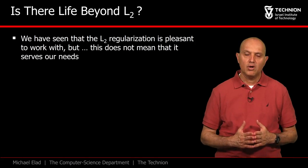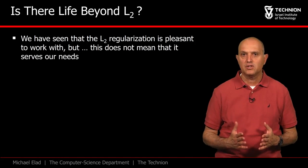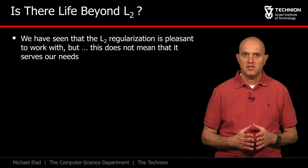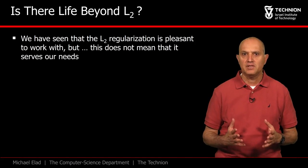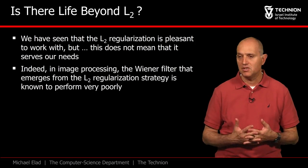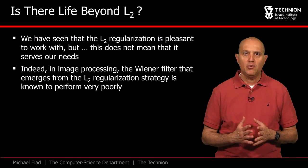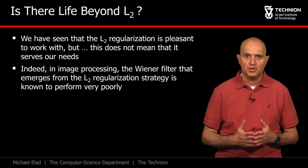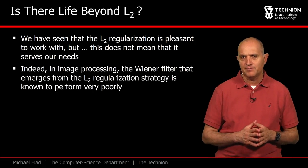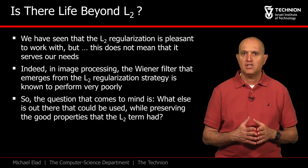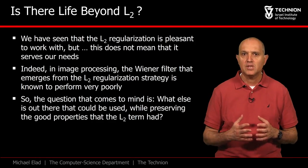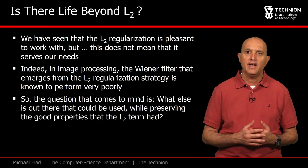So far, we discussed the L2 regularization and described its positive properties. However, this does not mean that it is always the best choice. In image processing, for example, the L2 regularization leads to the Wiener filter, which is known to perform very poorly. Therefore, we aim to suggest alternative regularization terms with the hope to keep some of the good properties that the L2 had.